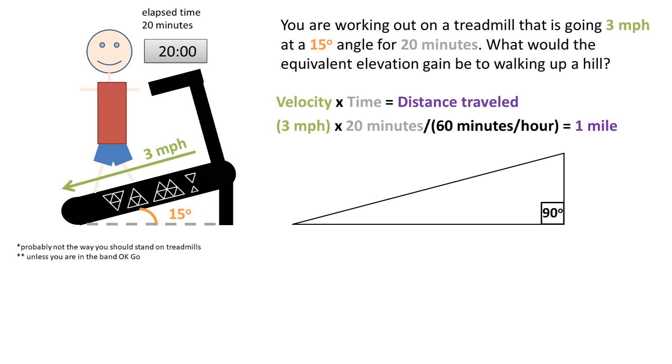So we can now make a right triangle. For one of the angles, we can place our angle of the treadmill of 15 degrees in that angle. We can put the 1 mile distance traveled at the hypotenuse or longest side of this triangle. And now, we want to solve for the opposite side or the y value, which is the height traveled upwards.